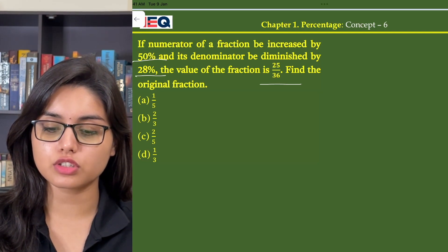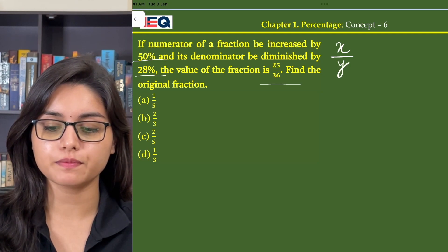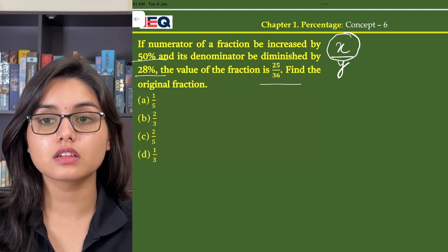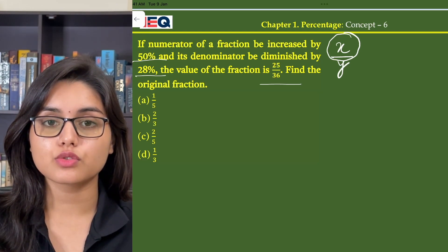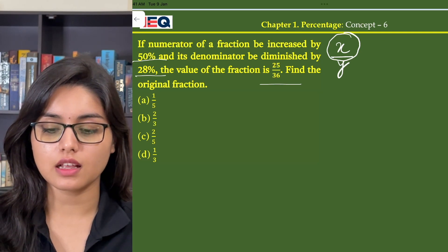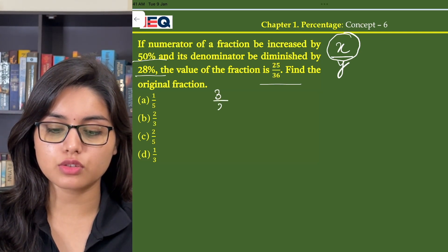Let's assume that the original fraction is x by y. Now, according to my question, the numerator that is x is increased by 50%. So, a 50% increase in x would be x plus 50% of x. That will give us 3 by 2x.